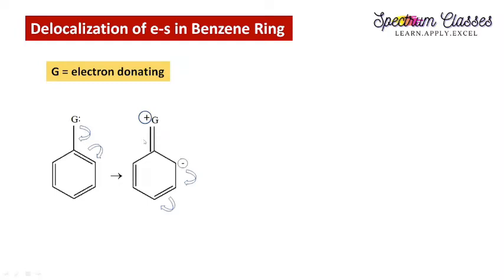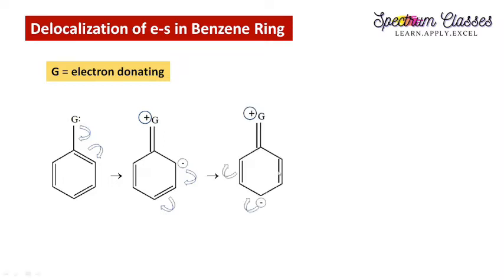When the group donates its electrons, a new bond is formed. The existing bond over there shifts to the ortho position. As electrons are donated towards the benzene ring, the group acquires a positive charge, and since these electrons shift to the ortho position, that position acquires a negative charge. Since we started with a neutral molecule, the charges must balance — plus and minus give a neutral molecule again. These electrons shift to form a new pi bond, which moves to the para position.